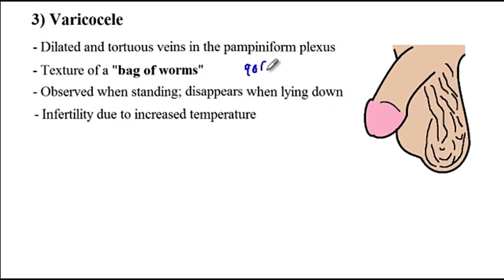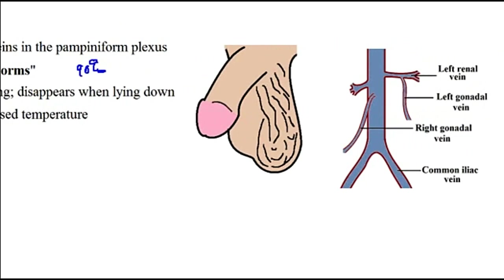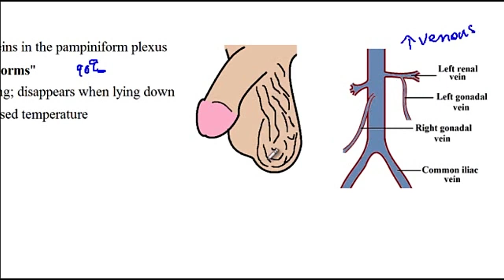About 90% of varicoceles are on the left side. The reason is due to the difference in venous drainage of the left testicle compared to the right. The left gonadal vein drains at about a 90-degree angle into the left renal vein, creating more venous pressure, whereas the right gonadal vein drains directly into the inferior vena cava. Therefore, there is increased risk of varicocele on the left side.